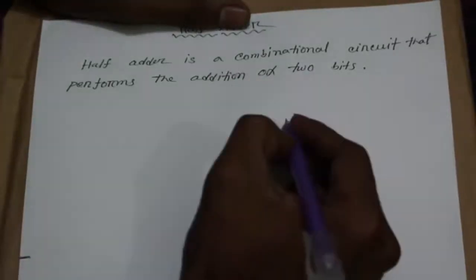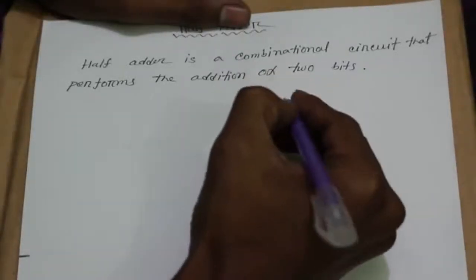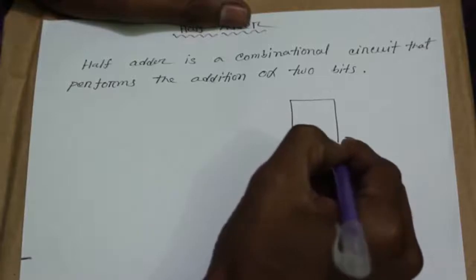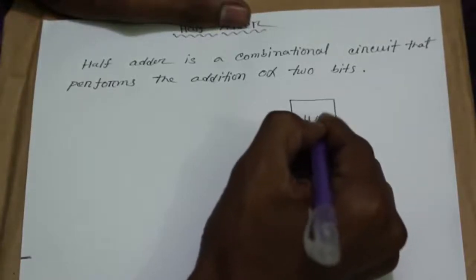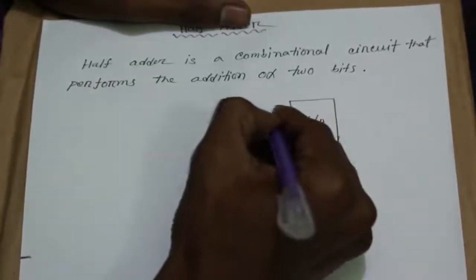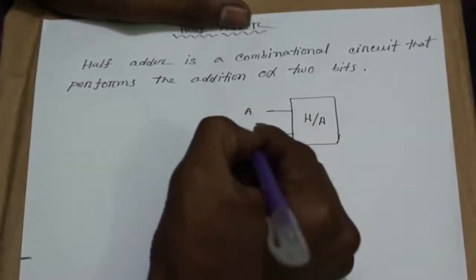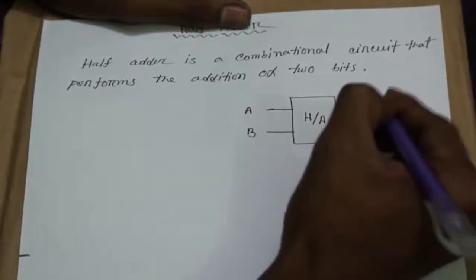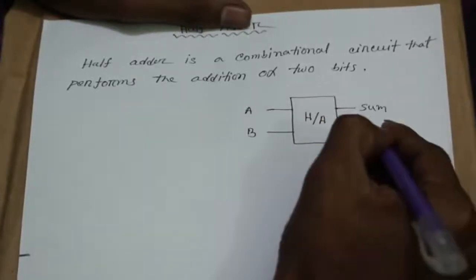Now let me show the block diagram of half adder. Here are 2 inputs A and B and the 2 outputs are SUM and CARRY.